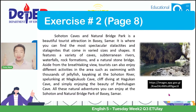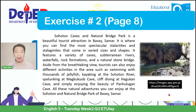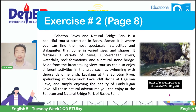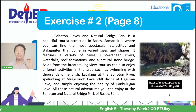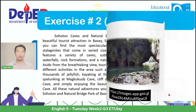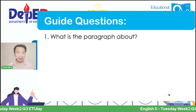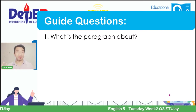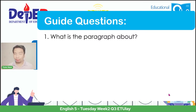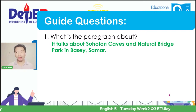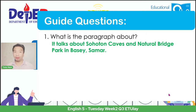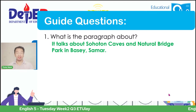Now, my dear learners, when we have read about this text, it's quite long. Let us answer the guide questions to digest and summarize it. We have the same guide questions as earlier. What is the paragraph all about? What is it about? If your answer is it talks about Sohotan Caves and Natural Bridge Park in Basay, Samar, then you are correct. That is also the same question found in your self-learning module, and this is the answer.